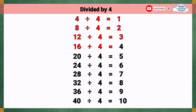Divided by 4. 4 divided by 4 equals 1. 8 divided by 4 equals 2. 12 divided by 4 equals 3. 16 divided by 4 equals 4. 20 divided by 4 equals 5. 24 divided by 4 equals 6. 28 divided by 4 equals 7. 32 divided by 4 equals 8. 36 divided by 4 equals 9. 40 divided by 4 equals 10.